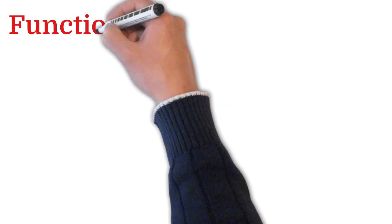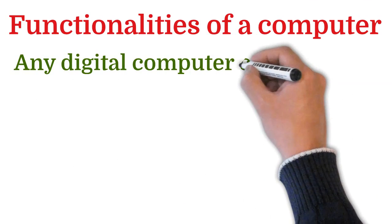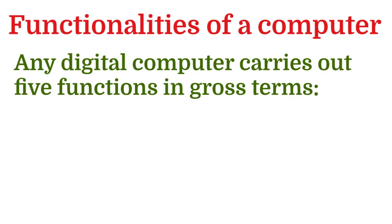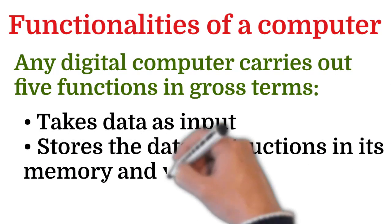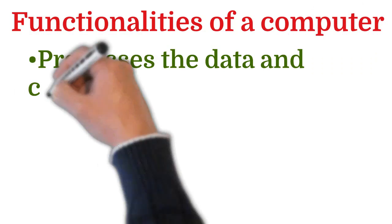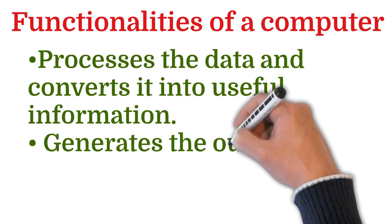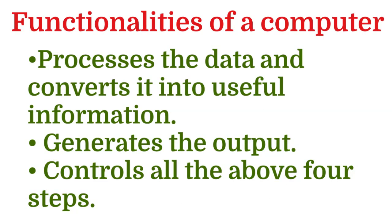Let's first discuss about the functionalities of a computer. Any digital computer carries out five functions in gross terms: it takes data as input, stores the data or instructions in its memory and uses them when required, processes the data and converts it into useful information, generates the output, and controls all the above four steps.